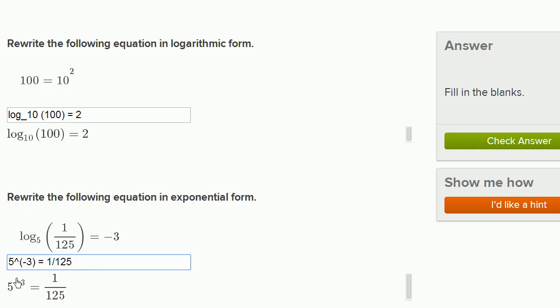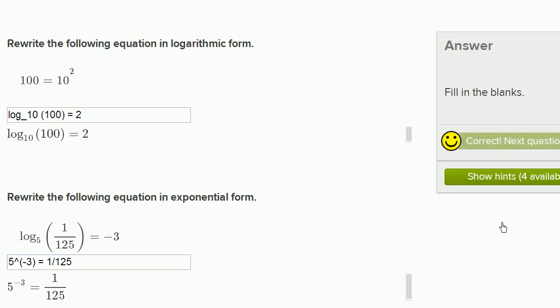We can verify that this has formatted it the right way. 5 to the negative 3 power is 1 over 125. The exact same truth about the universe, just in different forms—logarithmic form and exponential form. Let me check my answer and make sure I got it right. And I did.